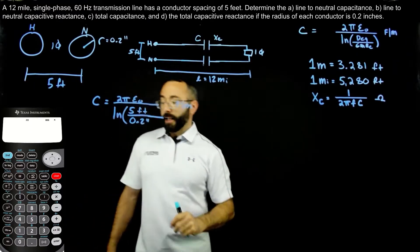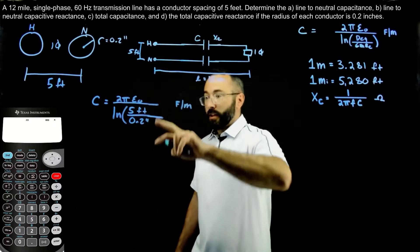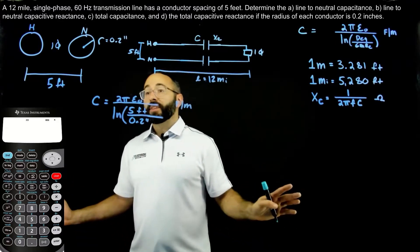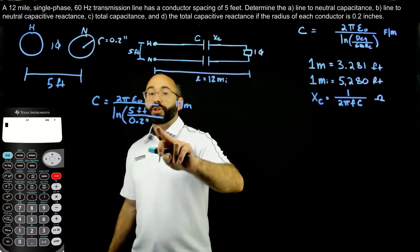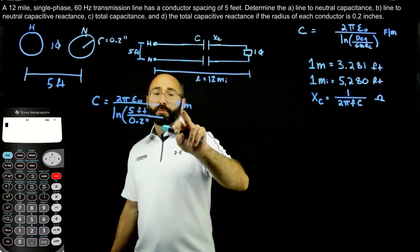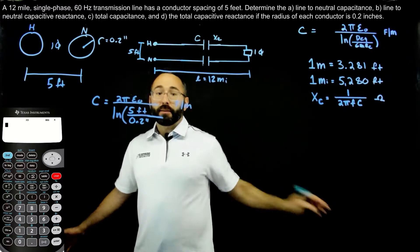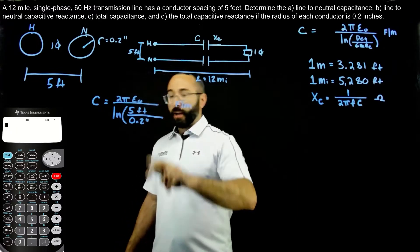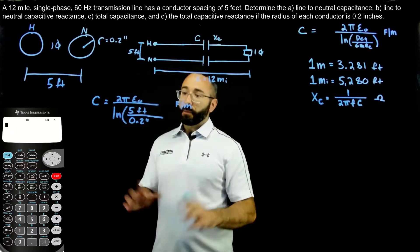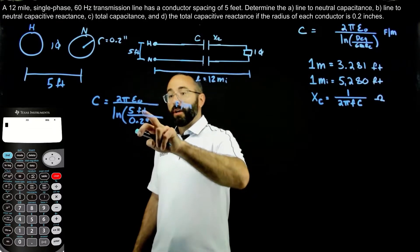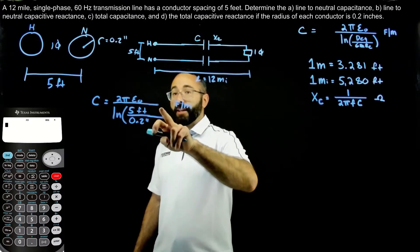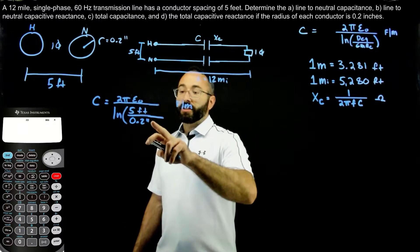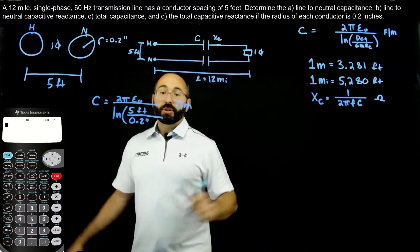Just like the last problem when we were solving for inductance, this ratio inside the natural log must be unitless — the units on top and bottom have to cancel. Last time we converted feet to inches so we had inches on top and inches on bottom. In this problem we'll do it the other way: we'll convert our 0.2 inches to feet, so we'll have feet on top and feet on bottom.